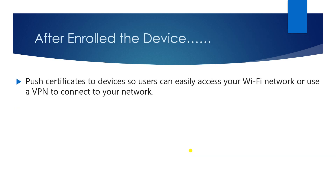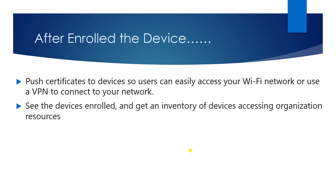After device enrollment, what will happen when you enroll your devices into Intune? You can push certificates to the device so users can easily access your Wi-Fi network or use a VPN to connect to your network. When you first enroll your device, you can push the certificate, and automatically it will take your Azure AD certificate during the enrollment. You can see in my previous videos how you can enroll Windows devices and how the certificate is pushed from Azure Active Directory to the devices.